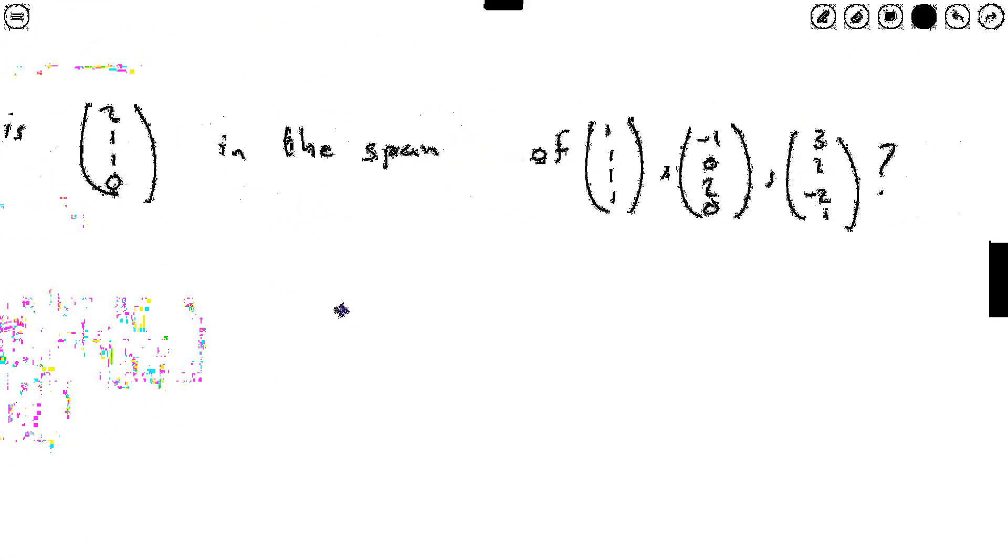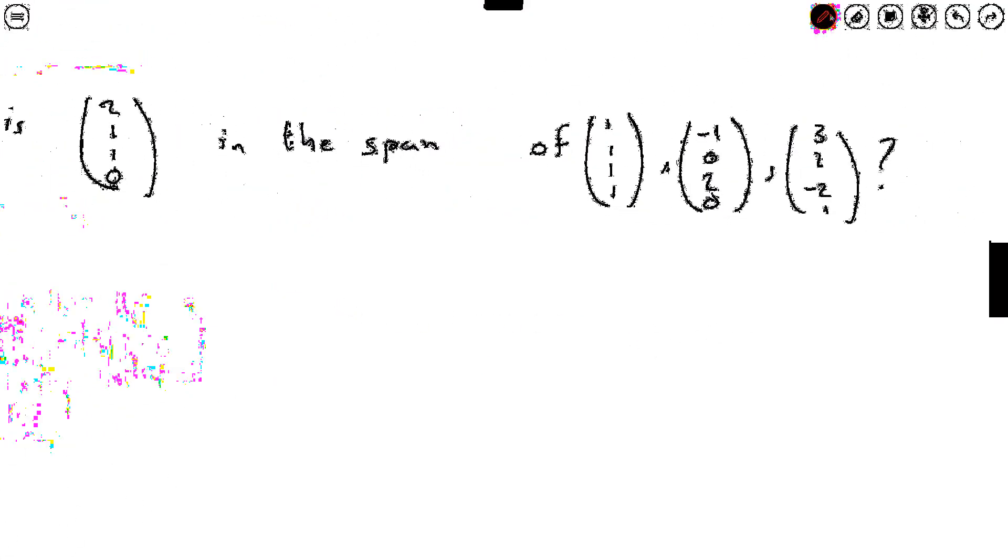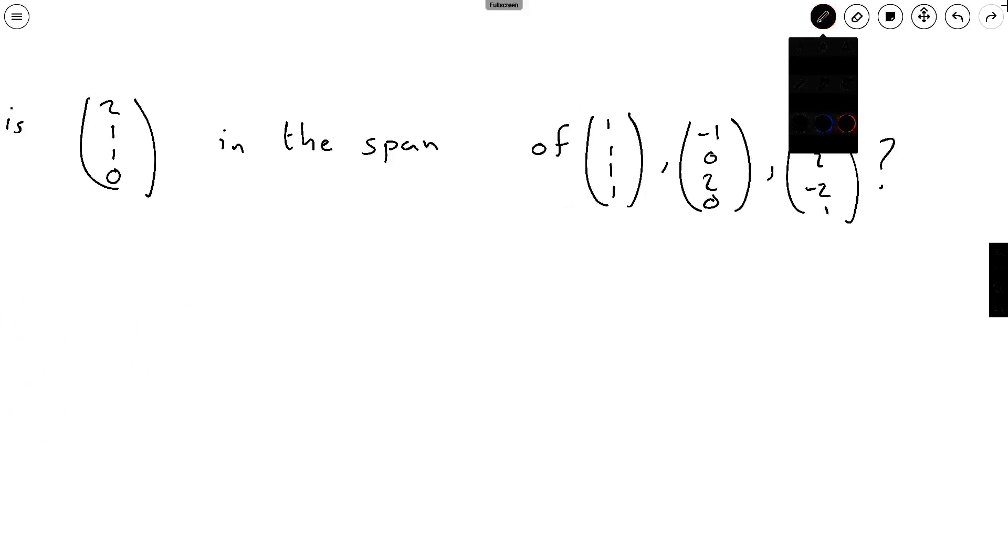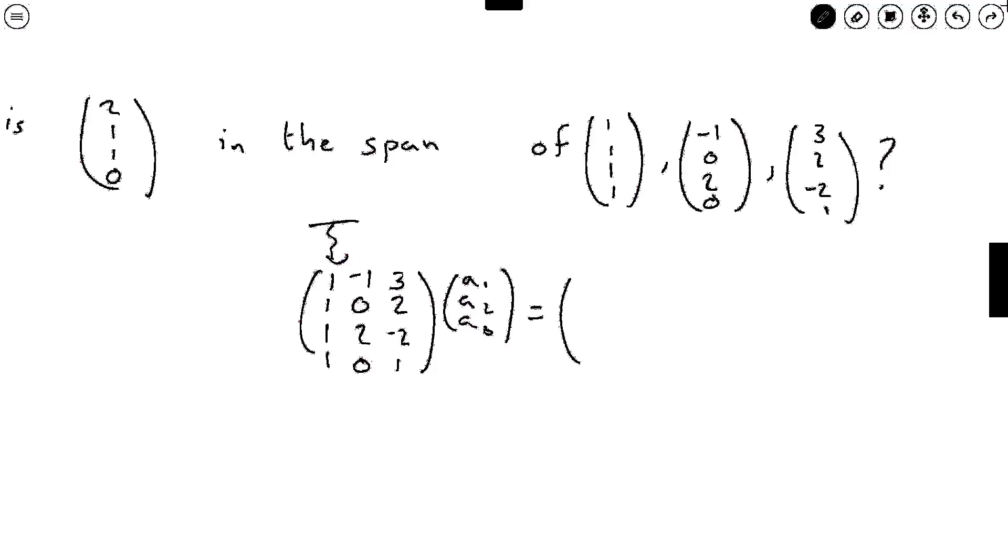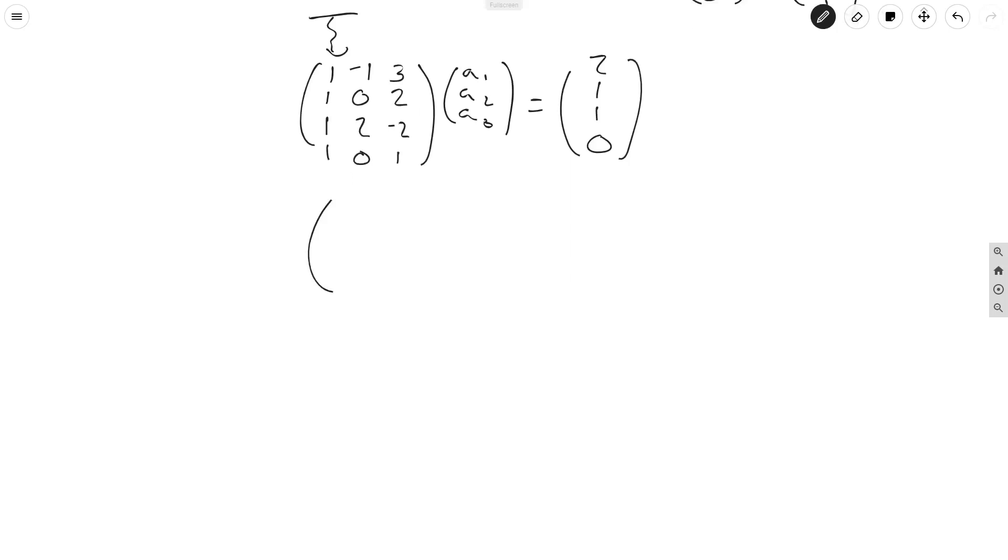So now we're just going to go briefly over this example which is a little more complicated but we're going to take what we learned in the last one to go through it a bit quicker. Okay so we worked out in the last part that to solve this question we just need to check whether the equation where we set up a matrix equation with a matrix given by the columns, the vectors that we're checking of the span, so these are the vectors v1, v2 and v3, applied to the vector (a1,a2,a3), in general this goes down to n if you have n vectors here and you set it equal to (2,1,1,0). So yeah set this w over here and from here we just have to solve this equation which isn't too bad even though it's a 4 by 3 matrix.